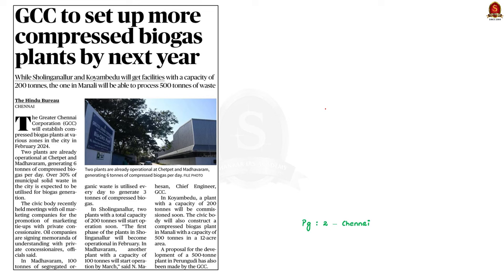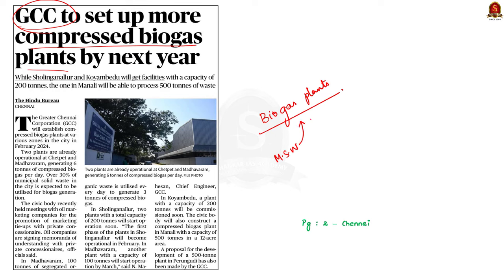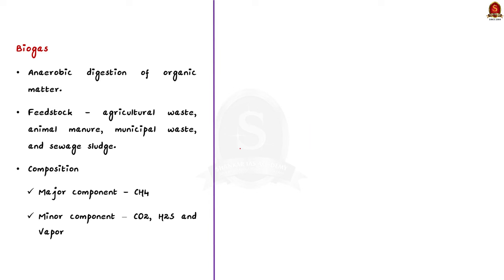Look at this news article. Greater Chennai Corporation is planning to establish compressed biogas plants at various locations by 2024. Through this, the corporation plans to utilize 30% of municipal solid waste produced in the city for biogas production. Biogas is primarily produced through anaerobic digestion of organic matter such as agricultural waste, animal manure, and municipal waste.